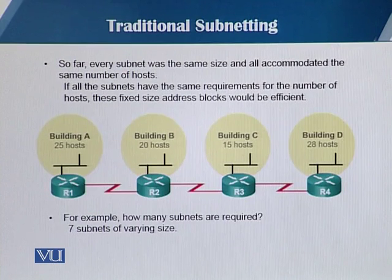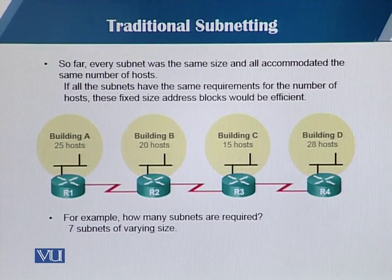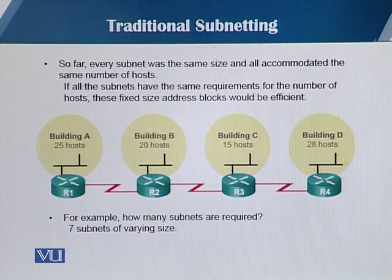For example, in this particular diagram on the slide, how many subnets are required? Because each building has its own requirement for the number of hosts. Seven subnets are required: four for the different LANs, which are buildings A, B, C, and D, and then three subnets between the routers — R1 and R2, R2 and R3, and R3 and R4. So a total of seven subnets are needed.